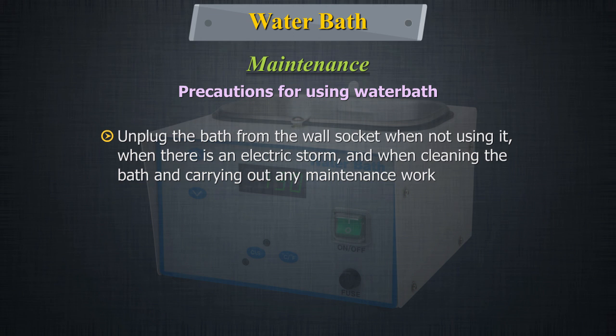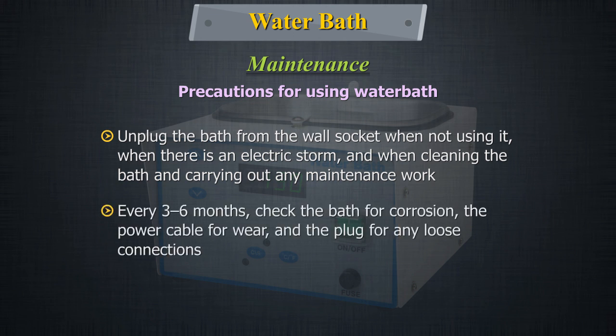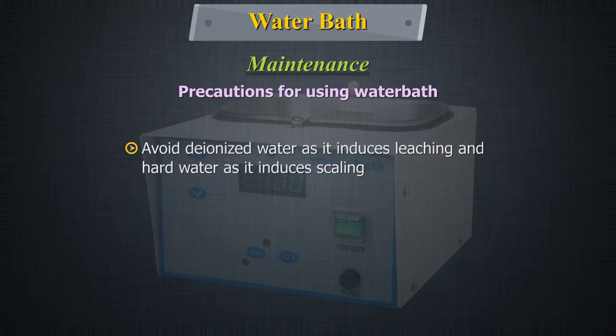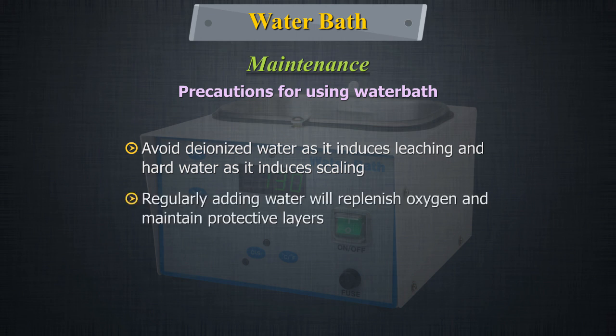Unplug the bath from the wall socket when not using it, when there is an electrical storm, and when cleaning the water bath and carrying out any maintenance work. Every 3–6 months, check the bath for corrosion, the power cable for wear and the plug for any loose connection. Avoid deionized water as it induces leaching and hard water as it induces scaling. Regularly adding water will replenish oxygen and maintain protective layers.